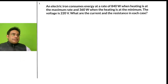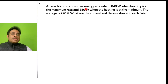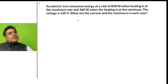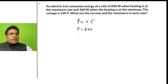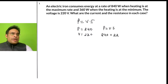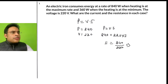Now solving a question: An electric iron consumes energy at a rate of 840 watts when heating is maximum and 360 watts when it is minimum. The voltage is 220 V. What is the current in each case? Using P = V × I: for the first case, 840 = 220 × I, so I = 840 / 220 ≈ 3.8 amperes.